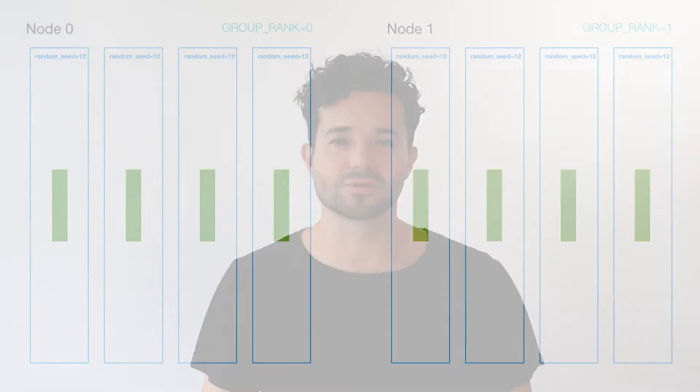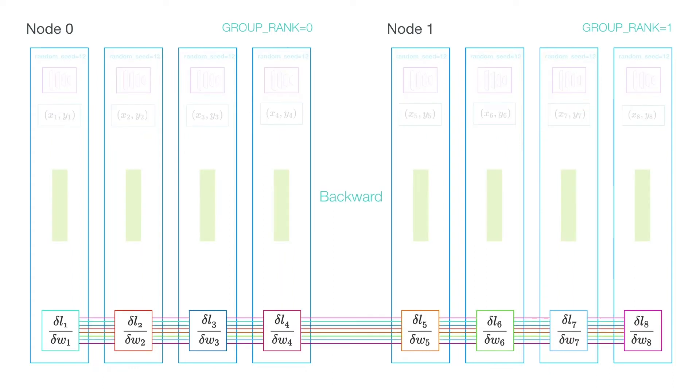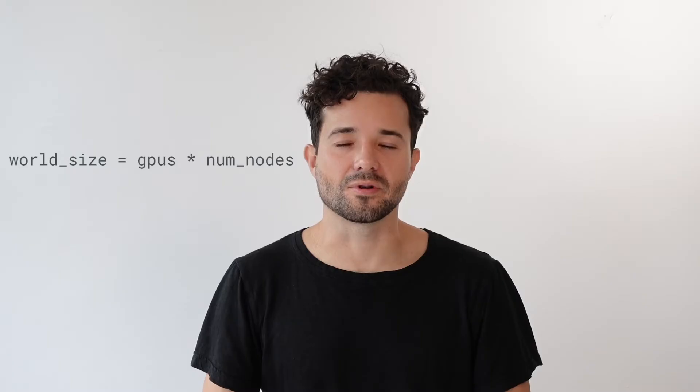Here's a quick summary of DDP. Every single GPU across every machine will get a copy of the model and a subset of the data. In our example, we're going to get 1/64th of our dataset allocated to each GPU, and that GPU will only ever see that 1/64th. The model will train through a forward and backward pass, and then sync gradients across all GPUs. In our example, the world size equals 64, which is the number of GPUs times the number of nodes.